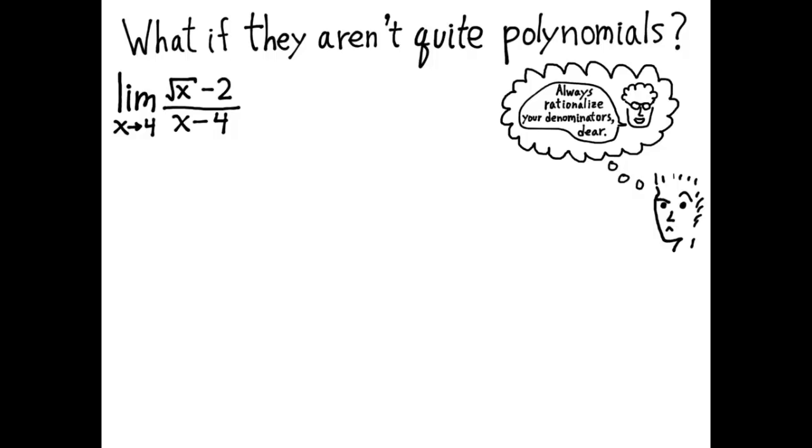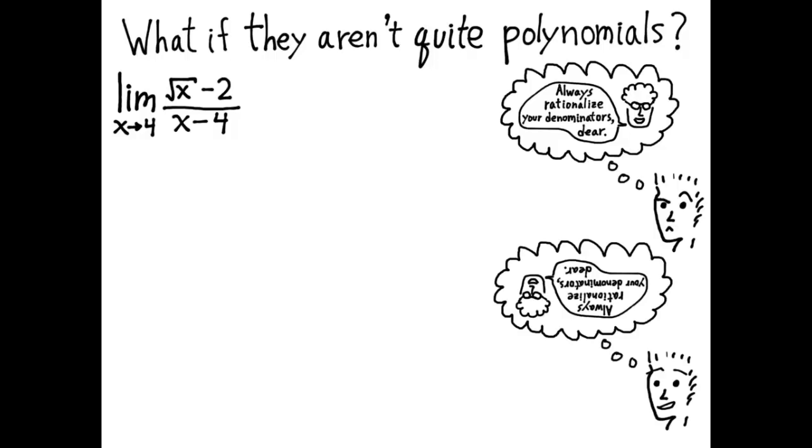You were told to multiply by the conjugate to rationalize the denominator. Well, in this case, sometimes you want to turn that advice upside down and rationalize the numerator.